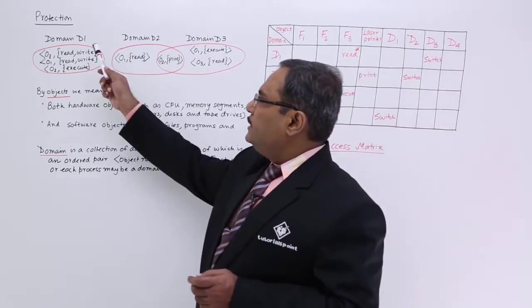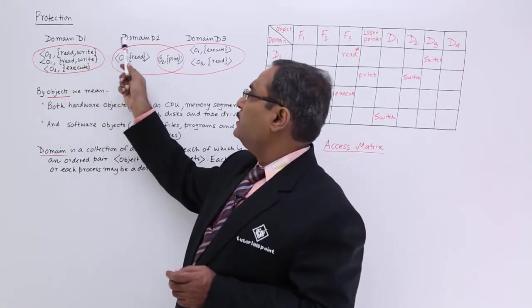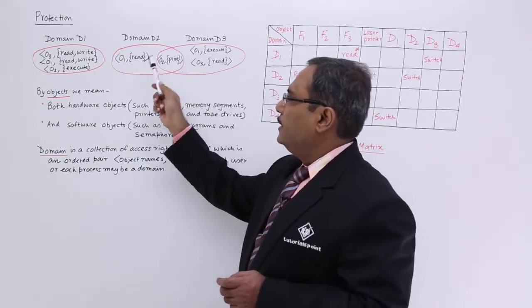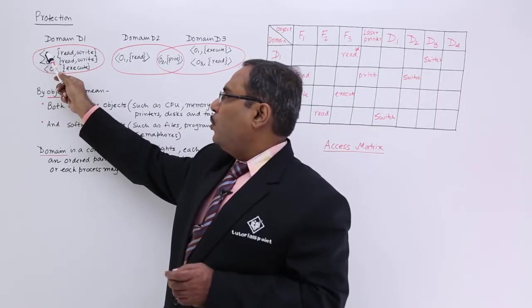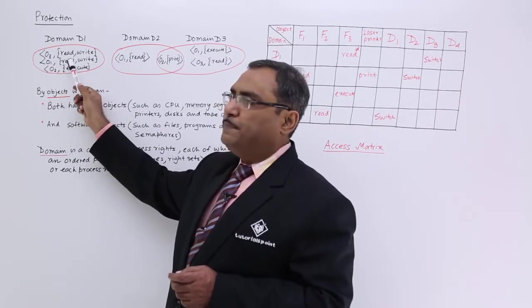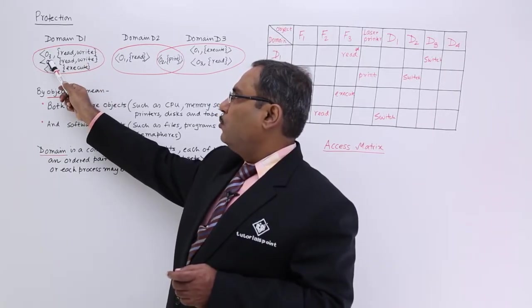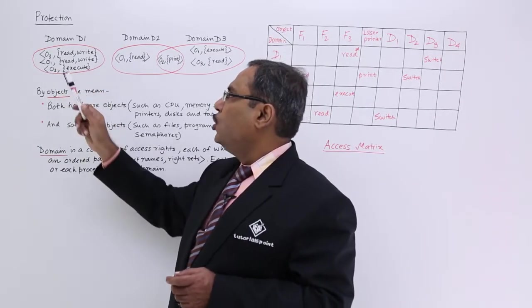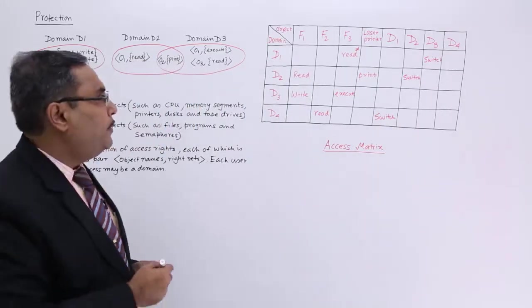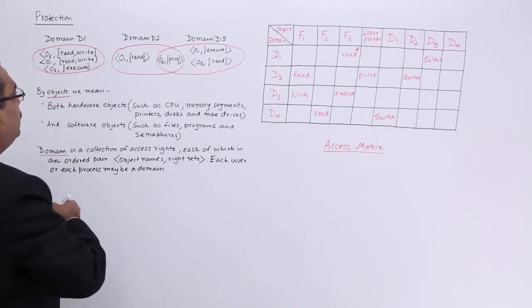Now, you see this is the domain, let us call the name is D1, this is D2, this is D3 and you see we are having this object and access rights as a paired, ordered pair. On this particular object O3, read write can be performed O1, read write can be performed O2, only the execute can be performed and similarly for this one.